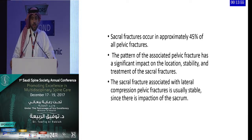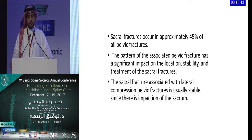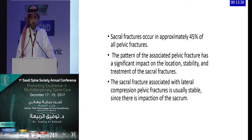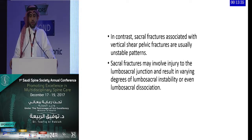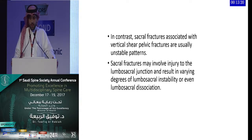Sacral fractures occur in approximately 45% of all pelvic fractures. The pattern of associated pelvic fractures has a significant impact on the location, disability, and treatment. Sacral fractures associated with lateral compression pelvic fractures are usually stable due to sacral impaction, whereas those associated with vertical shear of the pelvis are usually unstable. Some sacral fractures involve injury to the lumbosacral junction, representing the more unstable injuries that affect both the pelvis and the spine.